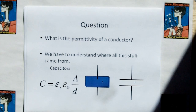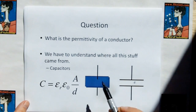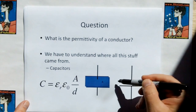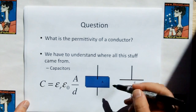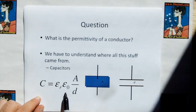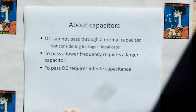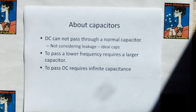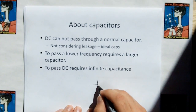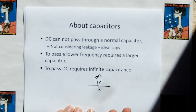So the question is: what is the permittivity of a good conductor? Most of this came from the study of capacitors. A capacitor is two conductive plates separated by a gap, and capacitance is given by the permittivity of the dielectric times the area of the plates divided by the distance between the plates. DC cannot pass through a normal ideal capacitor. To pass lower and lower frequencies requires higher and higher capacitance, and therefore to pass DC through a capacitor would require a theoretical capacitor of infinite capacitance. Keep that in mind.